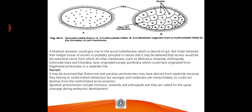A bilateral ancestor could give rise to acoel turbellarians, which are devoid of a gut. Hadzi believed that the mid-gut tissue of acoelomates is probably syncytial in nature, and that acoelomates would be the ancestral stock from which all other metazoans — such as mollusks, annelids, arthropods, echinoderms, and chordates — originated, except poriferans, which could have originated from flagellated protozoans in a separate line.